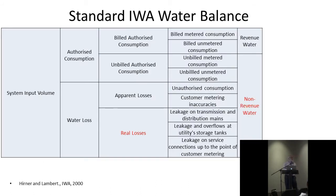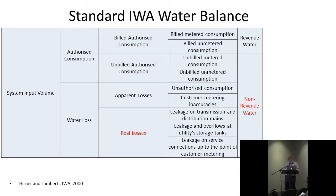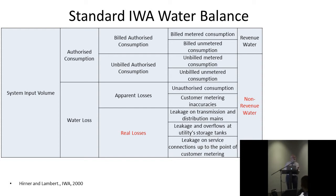Now, the main thing is what we call the standard IWA water balance, developed primarily by Alan Lambert around the year 2000. When people started on this, one of the first things you find is that every utility around the world calculates their water balance differently. Ken had a presentation called the 'cheat sheet,' showing how different people allocated water into boxes to explain leakage away and give it a different name. For instance, the Americans would make allowance for an average flow rate for known mains bursts and knock that out of the water balance.